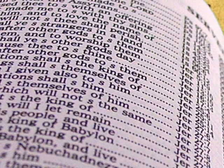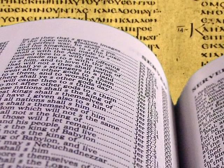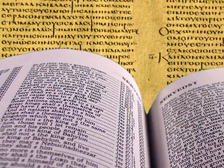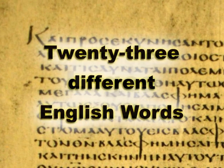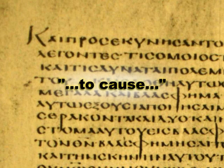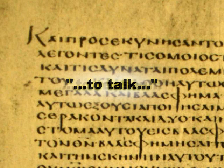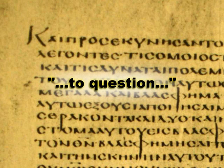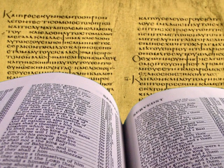The final step needed to complete your word study introduction is to consider the different translations that affect your theme word. When you study in the original languages, you will find that one Hebrew or Greek word can be translated by several English words. For example, the Greek word logos is translated by 23 different English words — some of these words are: to cause, to communicate, to give account, to think, to talk, to reason, or to question. You can see that identifying the various ways your study word is translated can seriously influence the direction of your study.